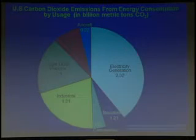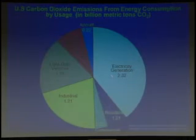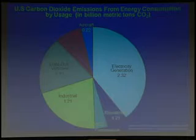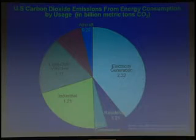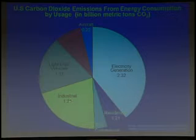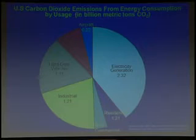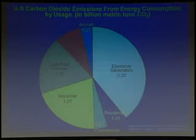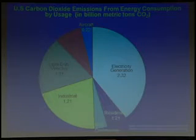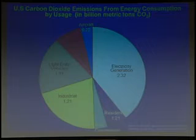That was CO2 by source. By usage, generating electricity alone causes the release of 2.3 out of 6 billion tons of CO2 in the United States annually. Other industrial uses account for about 1.2 billion tons, light-duty vehicles like cars and light trucks about 1.2 billion tons, with the remainder from residential heating and air conditioning, transportation, and other sectors. There are various ways to define these sectors, but those figures give a sense of the numbers.